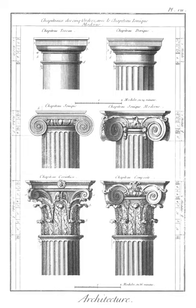Fascia: horizontal board attached to the lower end of rafters at the eaves. Ferritory: enclosure or chapel within which the feretory shrine or tomb was placed.